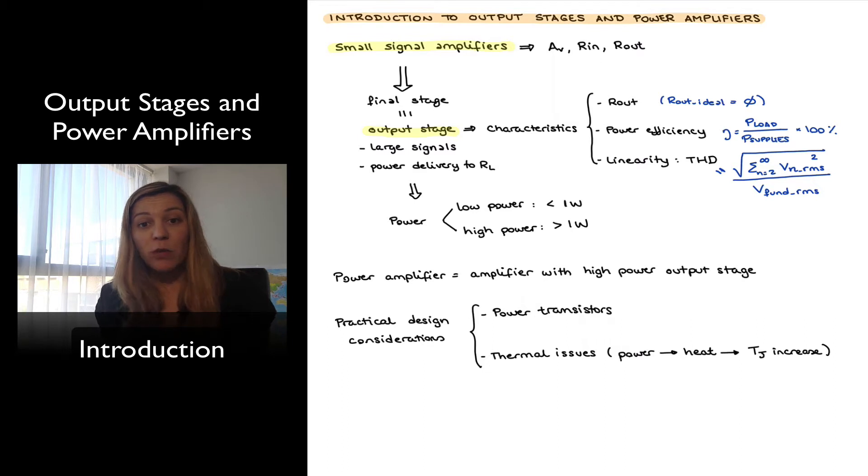The purpose of the output stage is to deliver power to a load which is external to the amplifier and they are different from small signal amplifiers in that oftentimes by the time the signal reaches the output stage it has gone through different stages of amplification and therefore output stages tend to deal with large signals and so one should use caution when using the small signal models that we use for the analysis of small signal amplifiers.